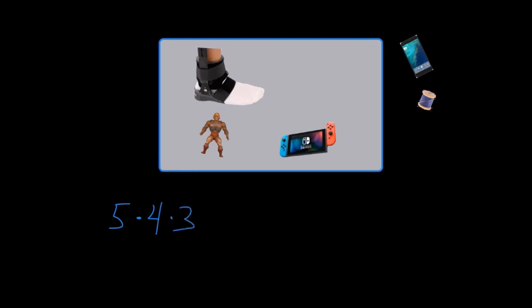Now, I'm going to take the foot off, and that's going to leave me He-Man and the switch. So, now I have two objects left to choose from. So, I'll multiply by two.